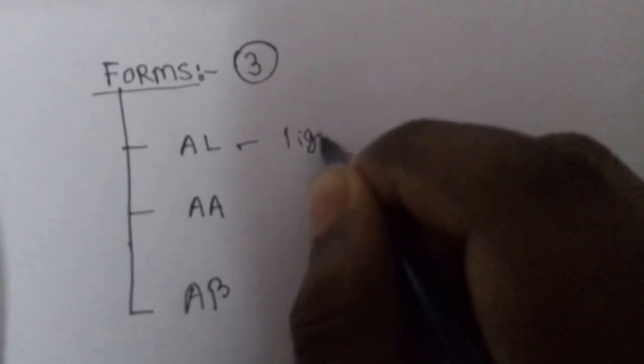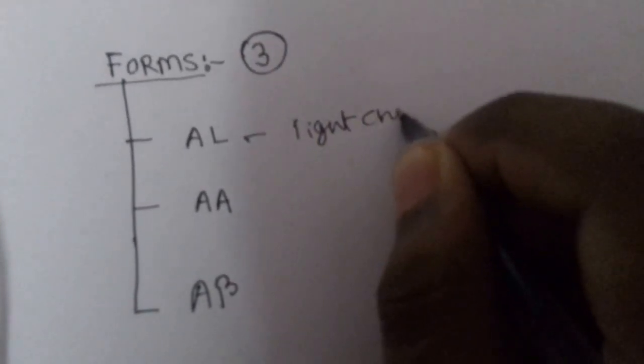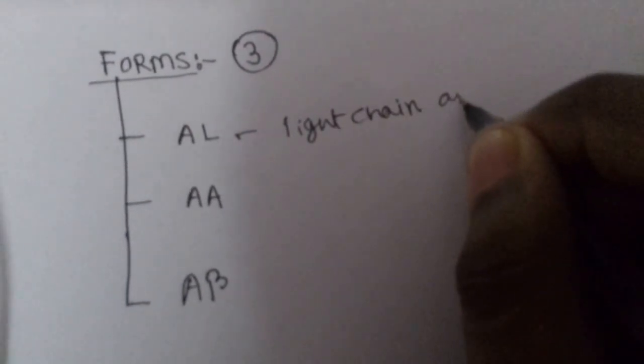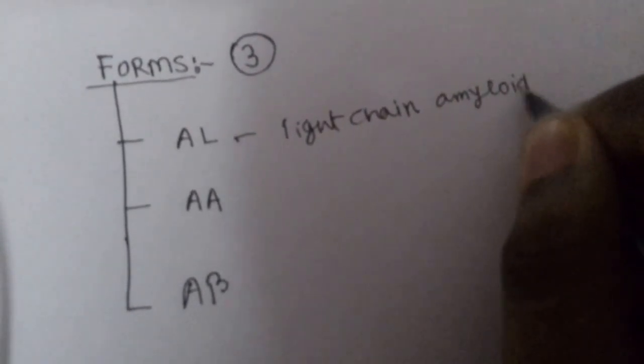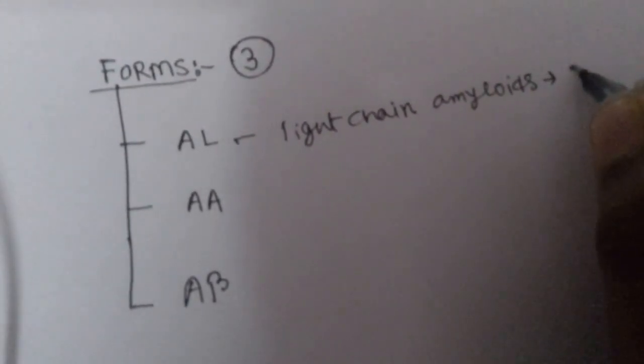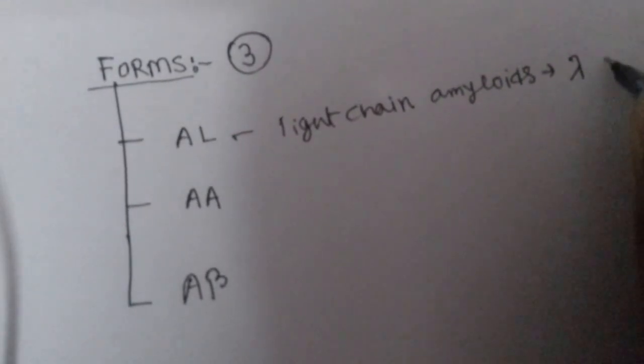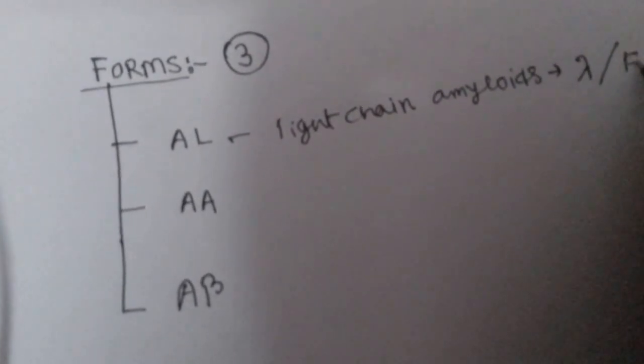There are three forms of amyloids: AL, AA, and Aβ. AL means light chain amyloids. They are mostly of lambda or kappa chain.